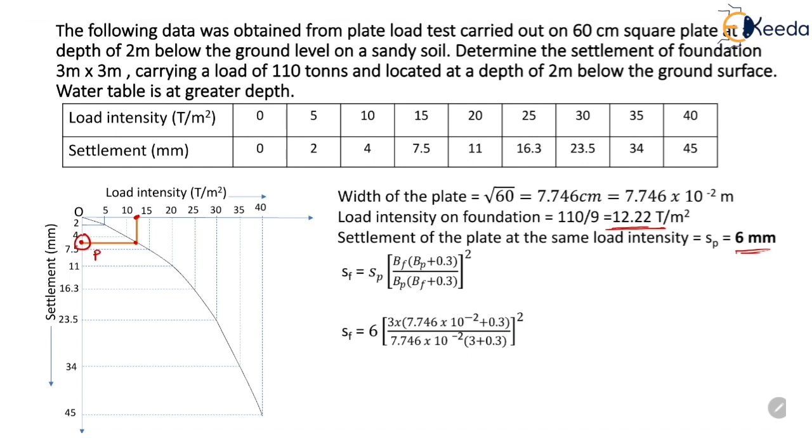Settlement of foundation equals 6 × (1.13238/0.2556)² = 117.764mm. Therefore, the settlement of the foundation due to a load of 110 tons equals 117.764mm.